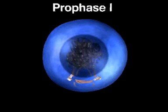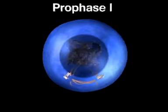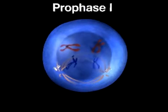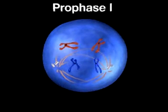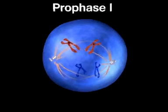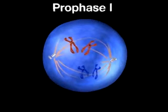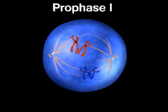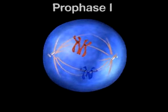During prophase I, the chromosomes coil up and a spindle forms. Then, in a step unique to meiosis, each pair of homologous chromosomes comes together to form a tetrad.